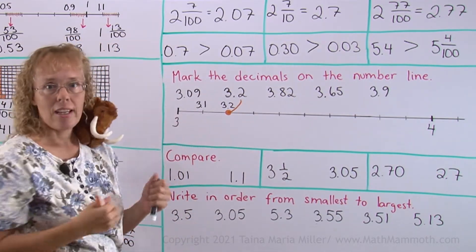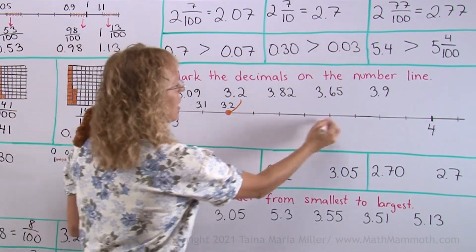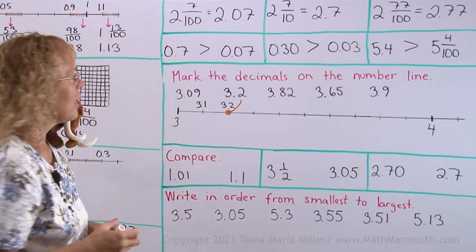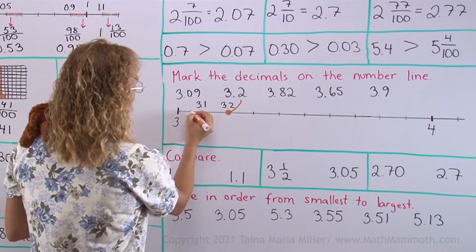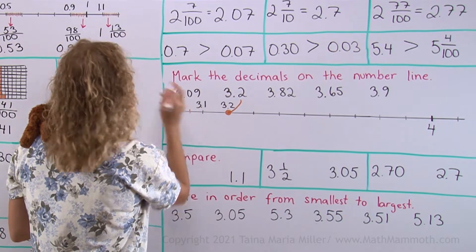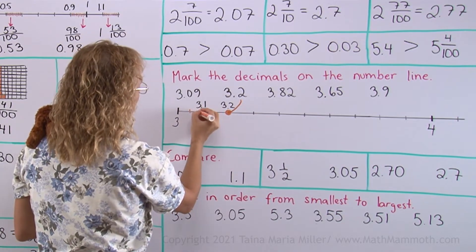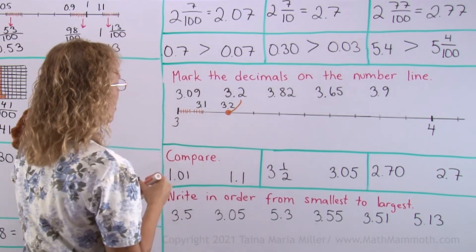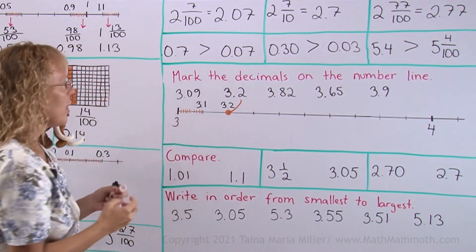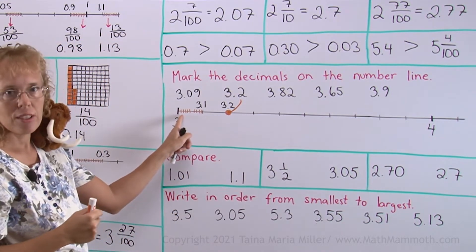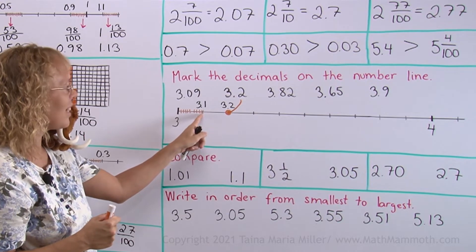But where is 3.09? Because none of these tick marks will be that. We need to now imagine that if this was divided into 10 little parts just like I had there. Okay. Didn't go evenly. Anyway. Then here would be 3.01. And 3.09 is this one.